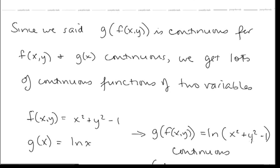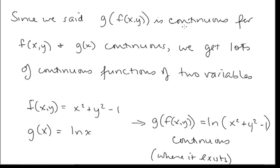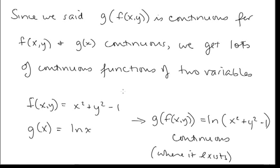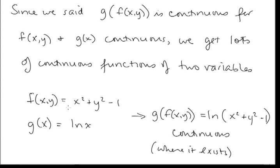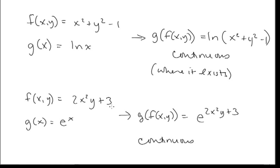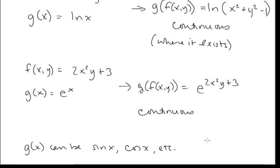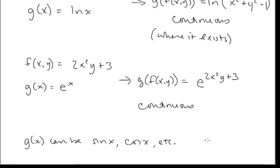Going back to compositions: since g(f(x, y)) is continuous when f(x, y) and g(x) are both continuous, we can get many continuous functions of two variables. For example, f(x, y) = x² + y² − 1 is a continuous polynomial, and g(x) = ln(x) is continuous, so ln(x² + y² − 1) is continuous wherever it exists. Similarly, f(x, y) = 2x²y + 3 composed with g(x) = e^x gives e^(2x²y + 3), which is continuous.